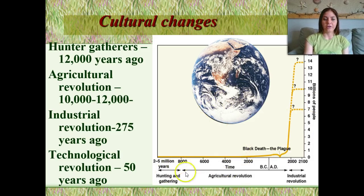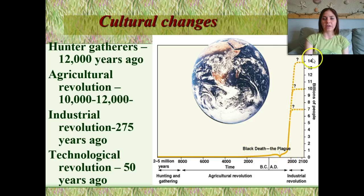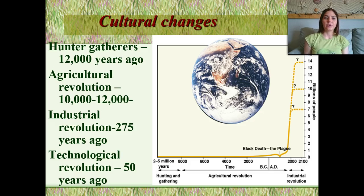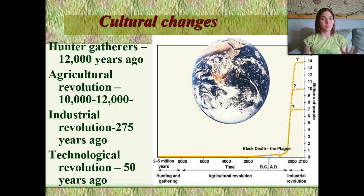Looking at our population growth — for a very, very long time we were in the millions, and then all of a sudden we basically skyrocketed. Right now, in 2015, we have around 7.2 to 7.3 billion people as our world population. We're constantly increasing, and we don't really know when or if we're going to hit that carrying capacity.